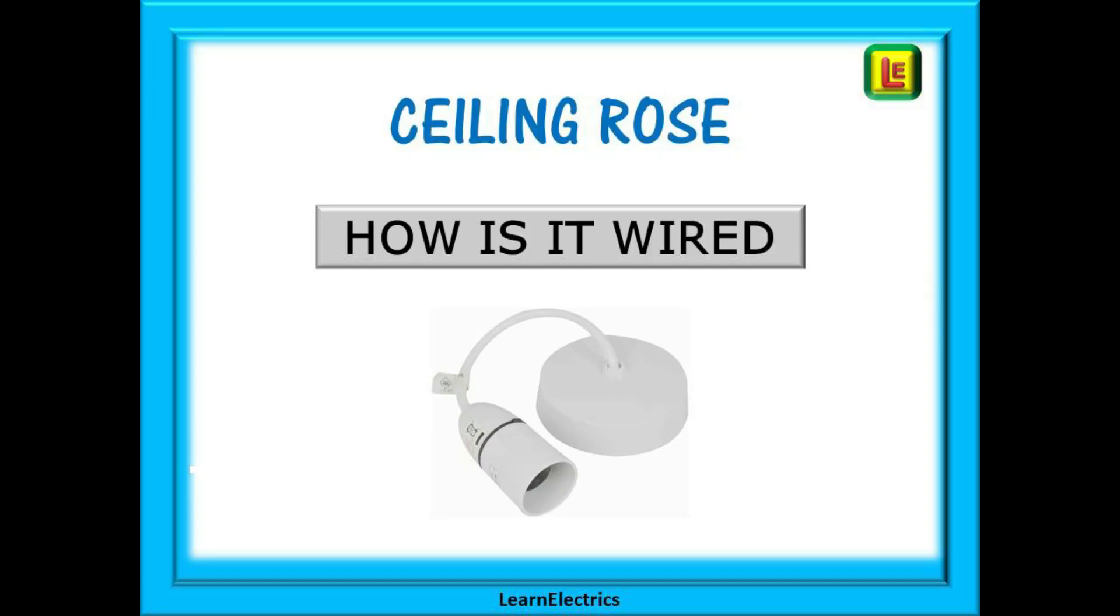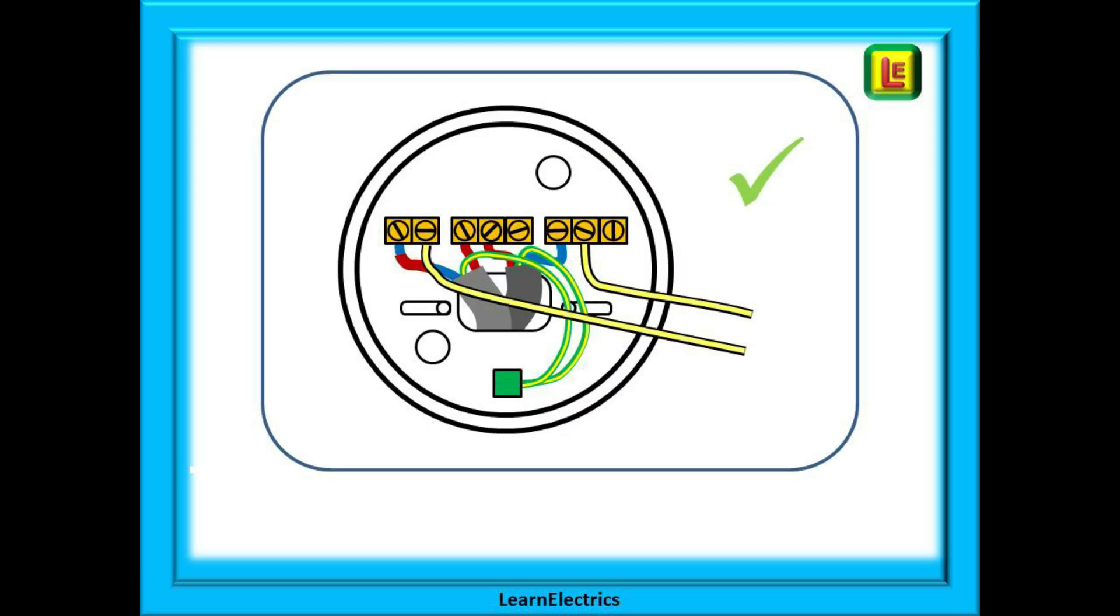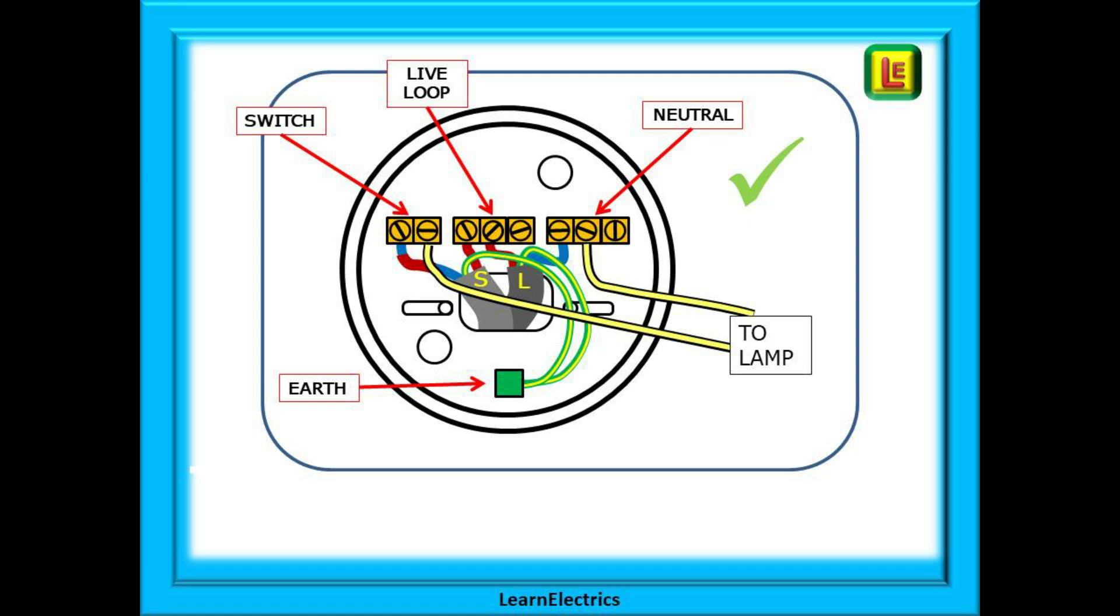Let's begin with the ceiling rose and look at how it should be wired according to the current three plate method. Remove the cover and we should have something like this. An example of what we call three plate lighting.